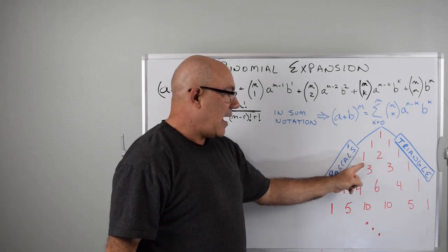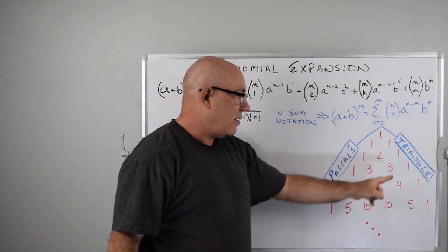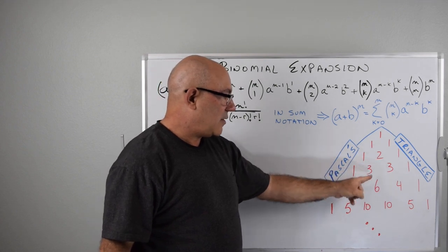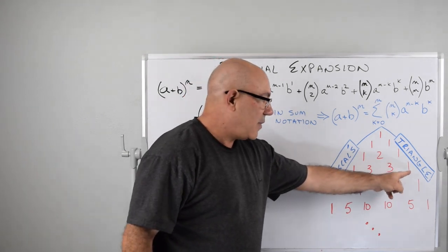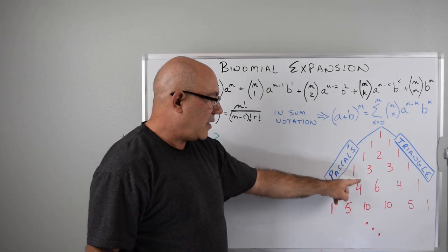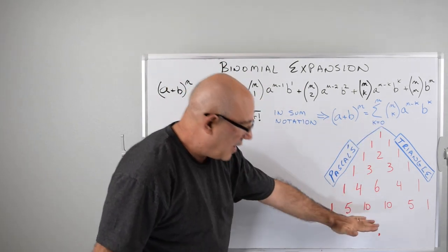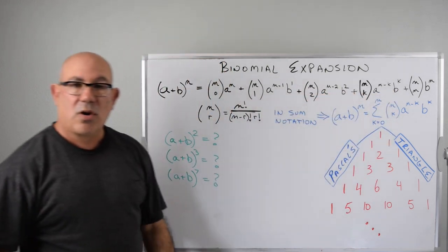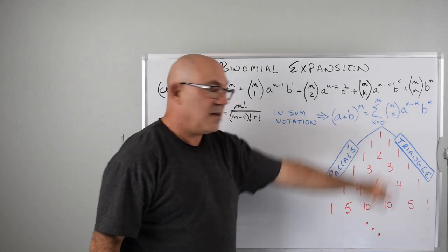Then you add a 1, add these two together to get a 2, then add another 1. You go to the next level: add a 1, add these two things to get a 3, add these two things to get another 3, then add a 1. Next level: 1, add these two to get 4, add these two to get 6, and so on. You can carry that down, and those are the same as the coefficients that come out of the binomial expansion sum.